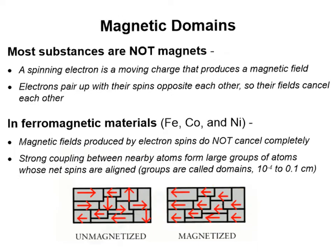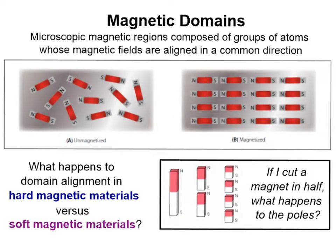In ferromagnetic materials, the domains, if each one of these is a domain, they line up like this when they are magnetized. This would represent domains of unmagnetized material. So magnetic domains are simply microscopic magnetic regions composed of groups of atoms whose magnetic fields are aligned in a common direction, like this, not like this. This is unmagnetized.